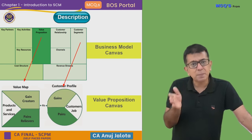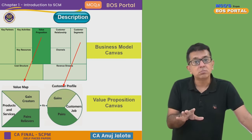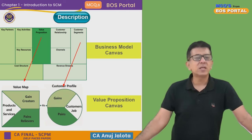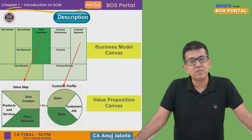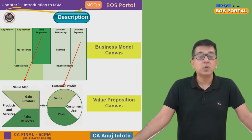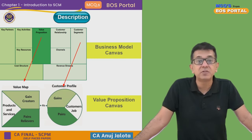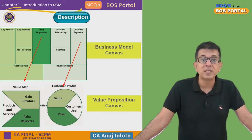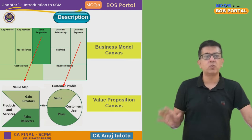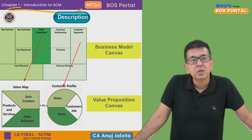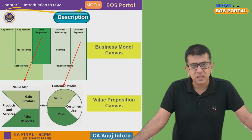The value proposition canvas explains in depth: what is the profile of the customer, what are the things he wants to get done, what are the pains he is currently experiencing without purchasing your product or service, and what gains he is looking for. On the left-hand side of the value proposition canvas, you have what the business is about to offer — products and services that will relieve the pains the consumer is experiencing, called pain relievers, and gain creators that deliver the gains the consumer wants.